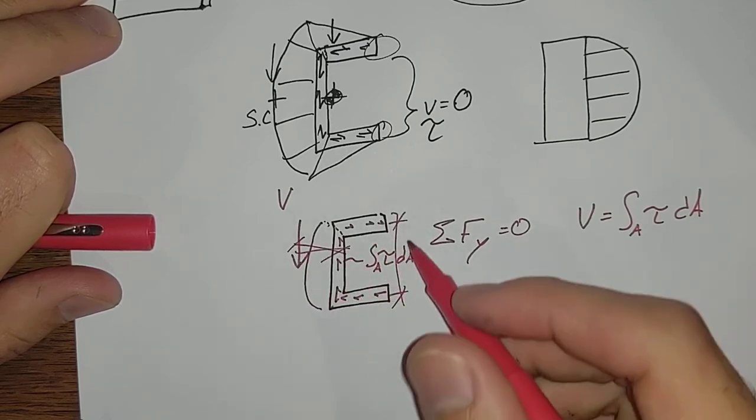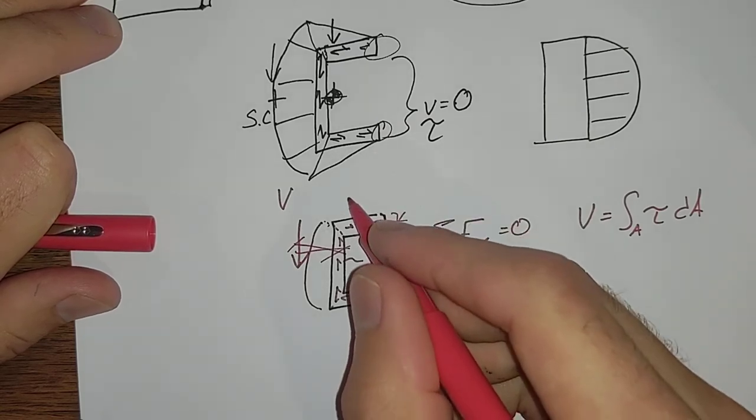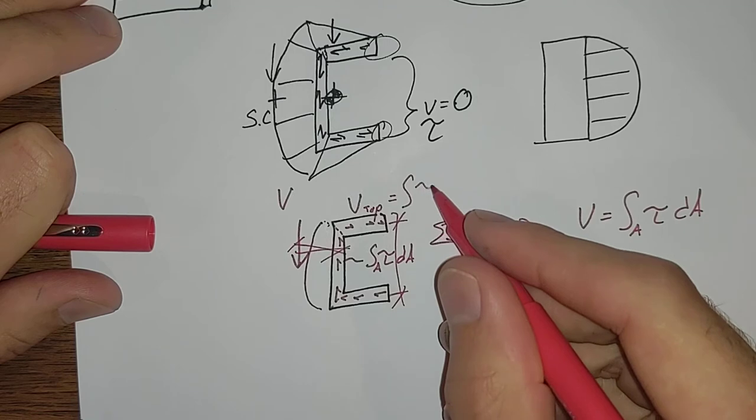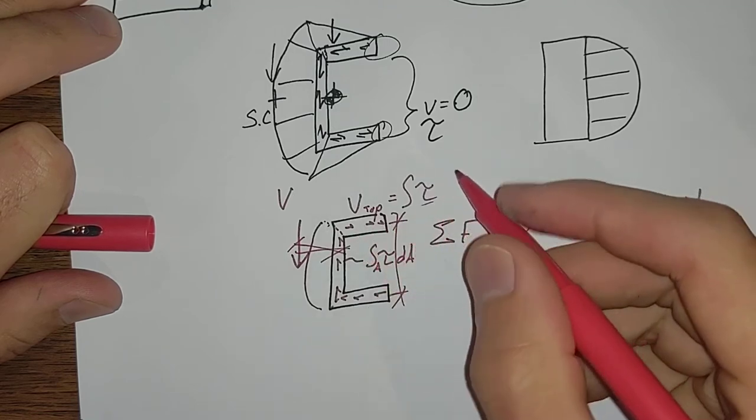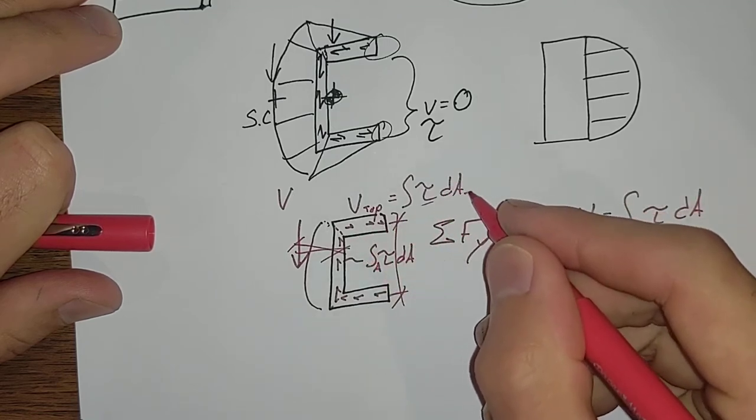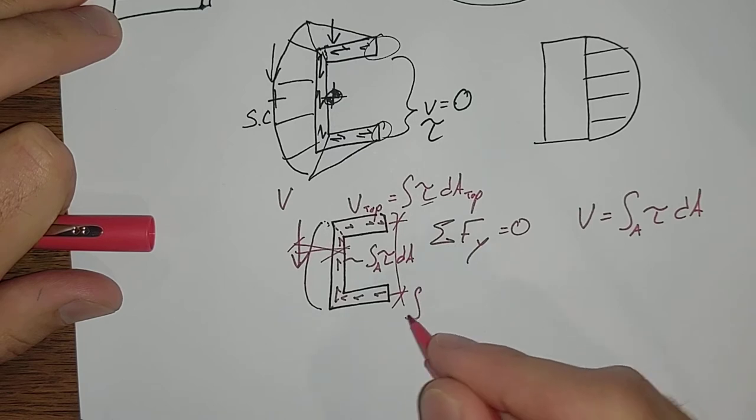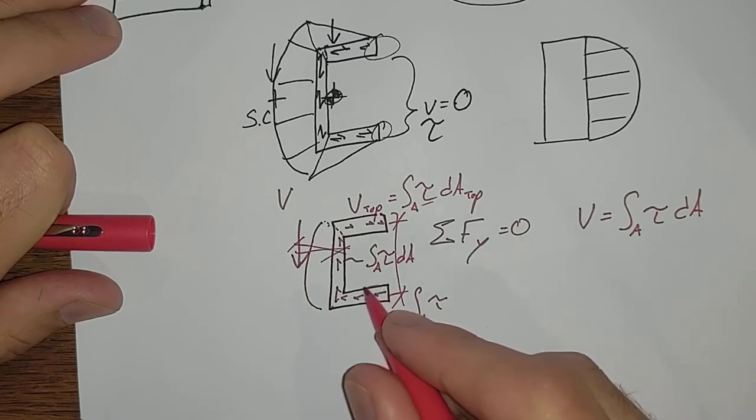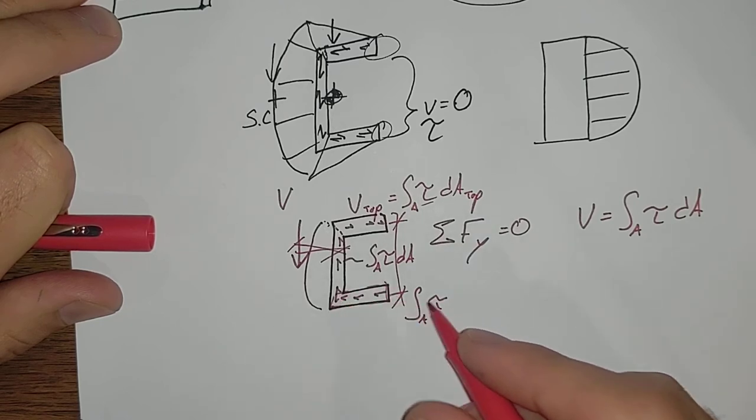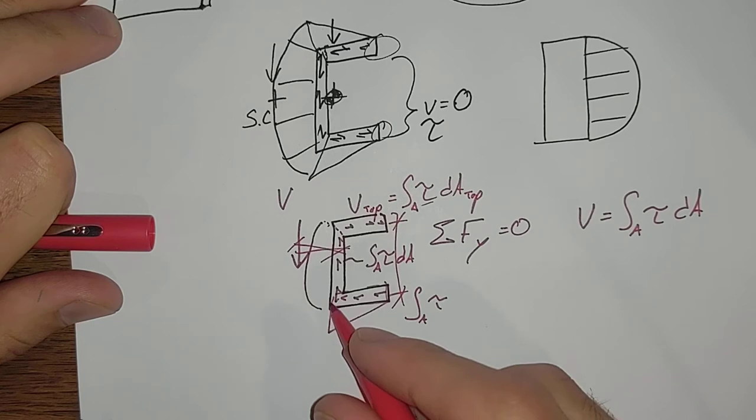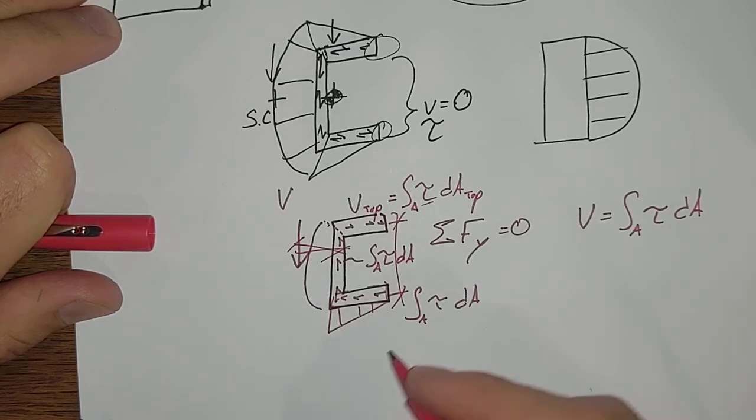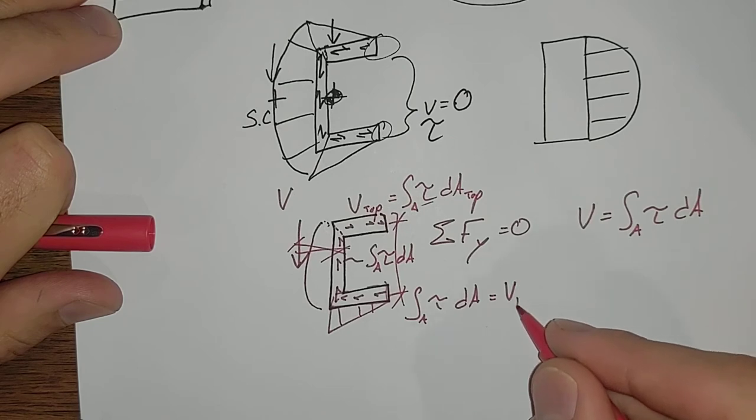The top is equal to the integral of our shear force over that area. And we'll integrate over this bottom area as well, and come out with the area under this shear curve equal to V bottom.